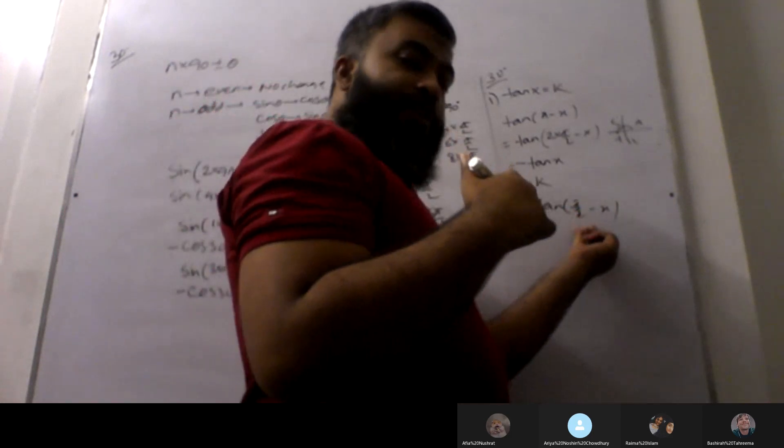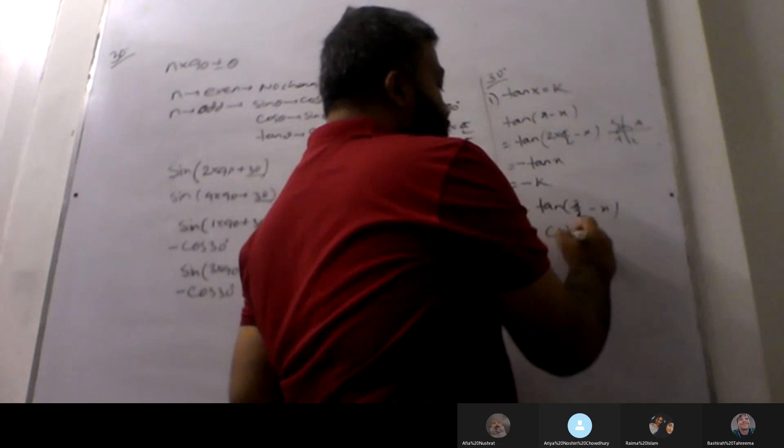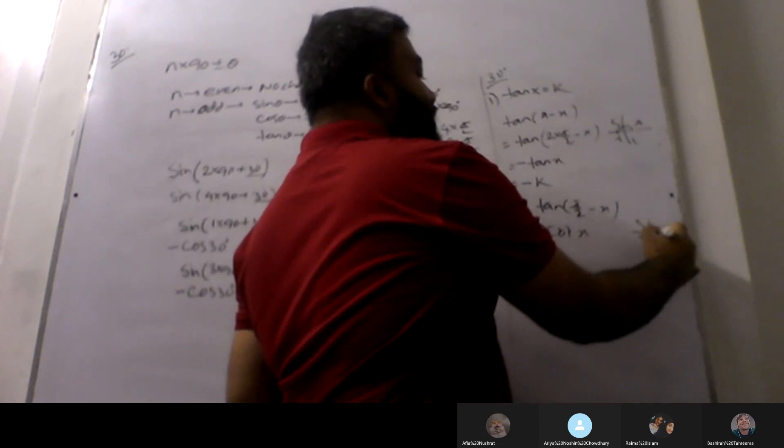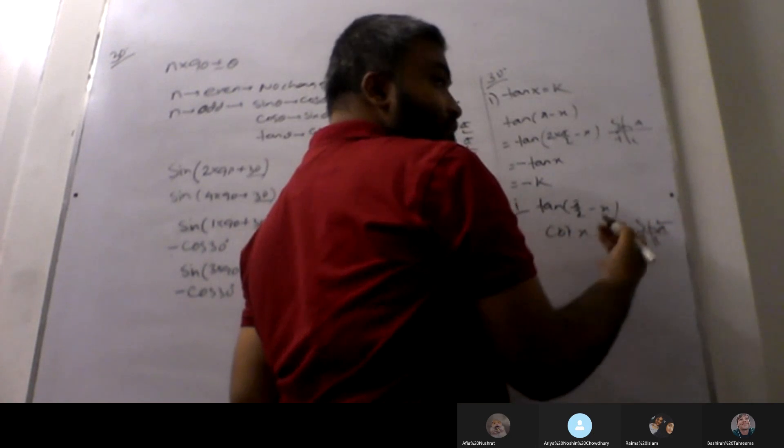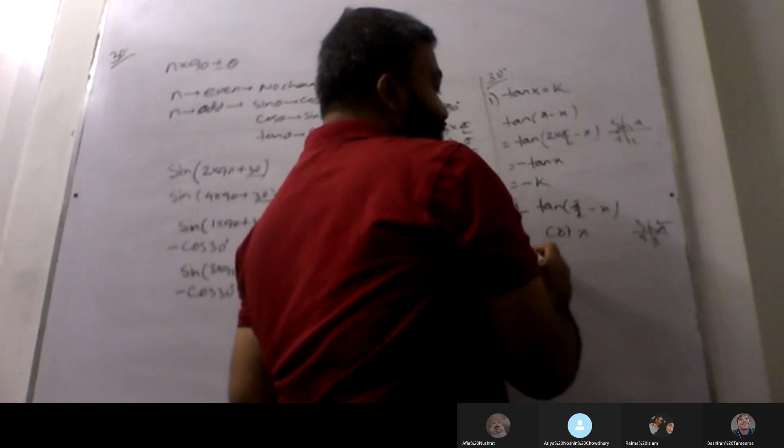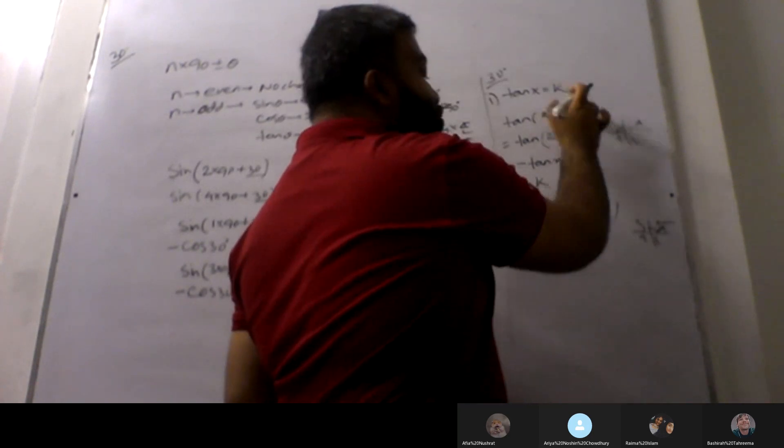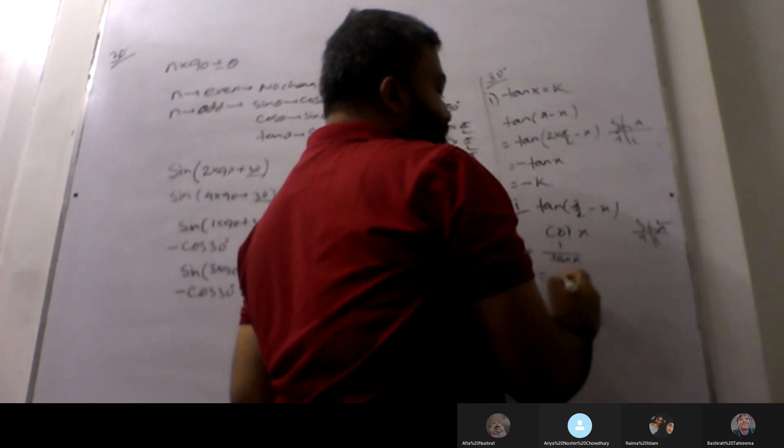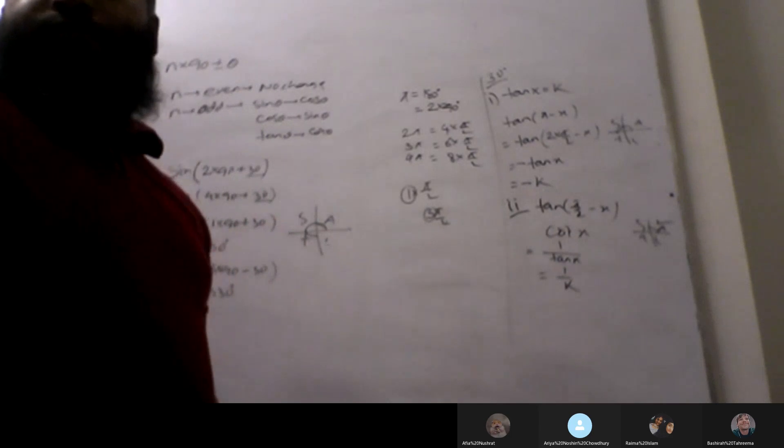90 plus the odd number, tan shifts. So, what does it shift? It's positive negative. This is 5 by 2. All quadrant is positive. First quadrant, all functions are positive. Cot x. Cot x value. The value is tan x. So, 1 by tan x. So, 1 by k.